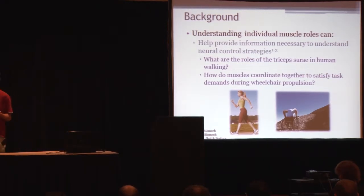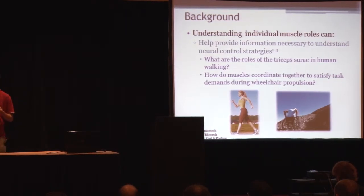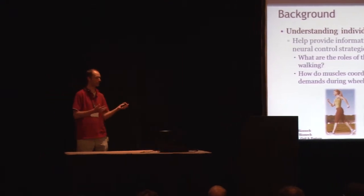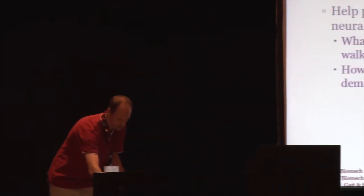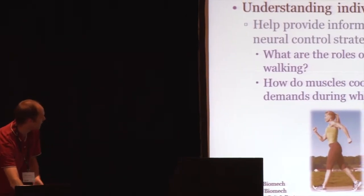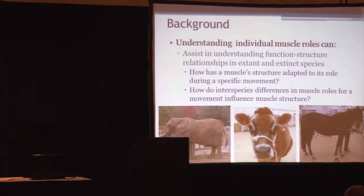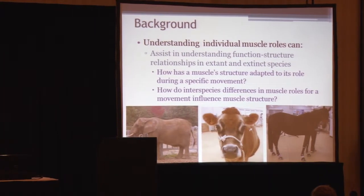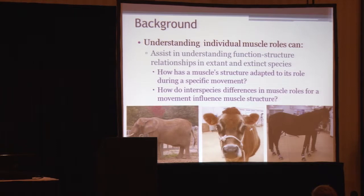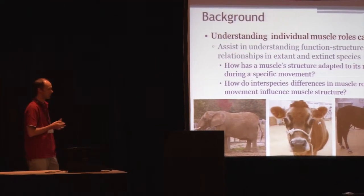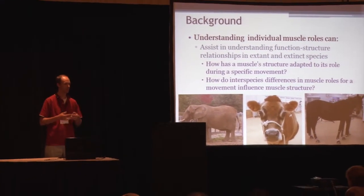Specifically, I actually come from a human clinical background, so I'm interested in understanding how birds like ostriches or other bipeds are different from humans to get some insights into human movement as well. I want to understand what are the muscle roles, how do they help us, and how do muscles coordinate together. You can answer a lot of these questions to help us understand function-structure relationships in both extinct and extant species.